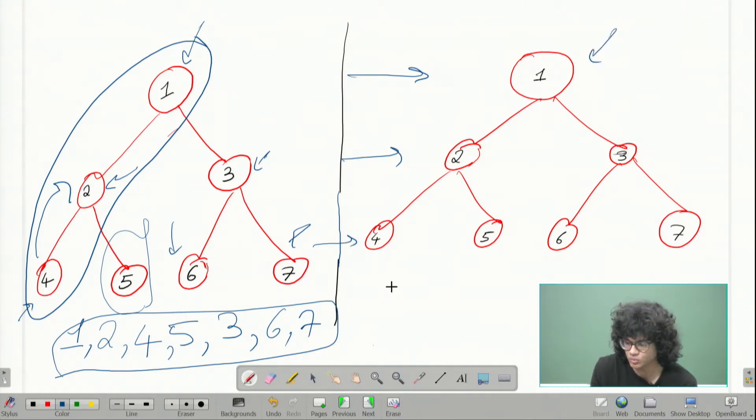So we start at the root node one, then we see children. So we say we come to two. Now before going to the children of two, we see two actually has a sibling three. And we want to explore this whole breadth before moving on. So we take the next child three. And now we see that this whole breadth has been traversed.